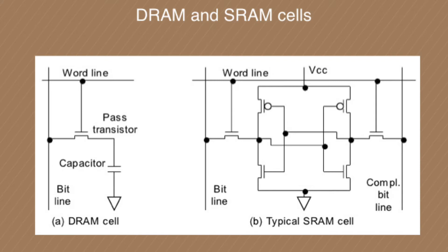The SRAM consists of many transistors and has a bit line and a complementary bit line. Based on the word line, it will decide which data to store, and power is always supplied to the SRAM cell.